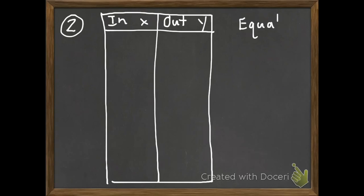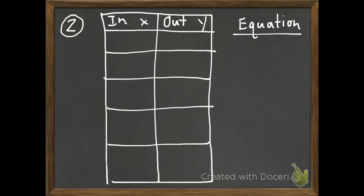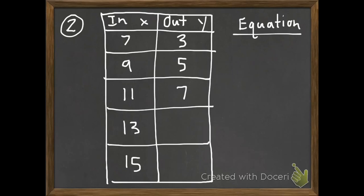Problem number two. I'm doing this one up and down — if you want to keep doing them sideways you can, or copy it exactly as I have it. Same thing: write an equation that describes the pattern, then use the equation to find the next two output numbers. Our inputs are 7, 9, 11, 13, 15. When I put in 7 I get out 3; put in 9 I get out 5; put in 11 I get out 7. It's going down, so we're subtracting on this one. Figure out your equation and complete the table.